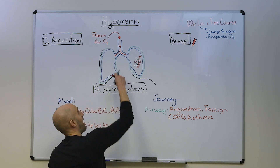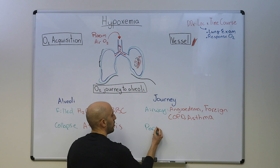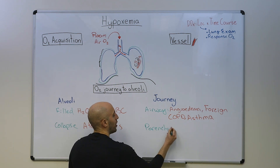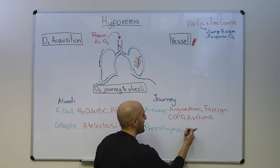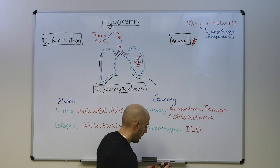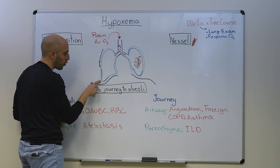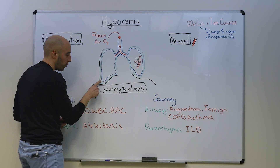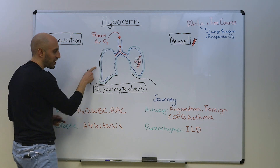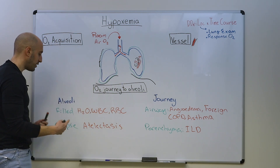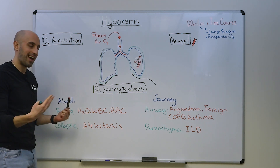We've already talked about the alveoli as we're following the path of oxygen. What about the parenchyma? If you have interstitial lung disease, which has its own differential diagnosis, this can lead to hypoxemia. Diseases at the site of the pleura — pleural effusion, pneumothorax, hemothorax — as well as pathology at the level of the diaphragm and chest wall can all lead to hypoxemia through collapsing the alveoli.